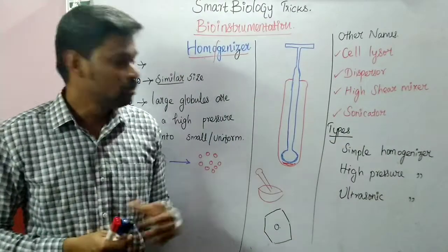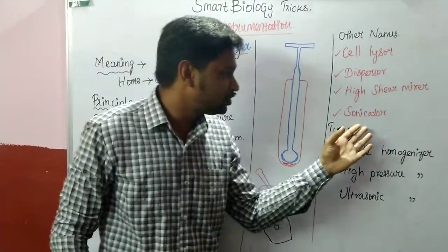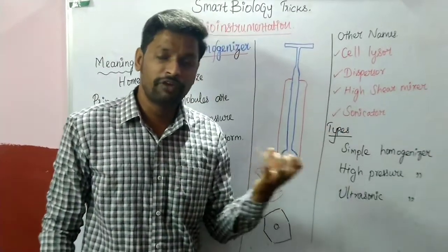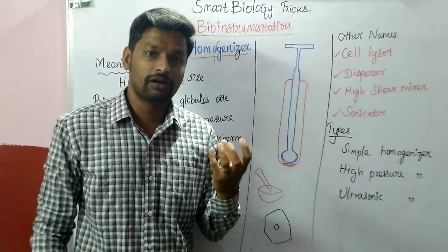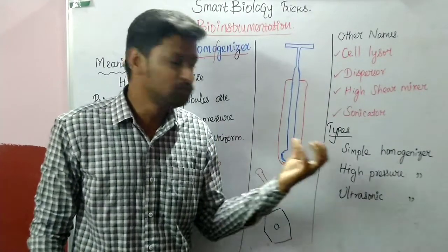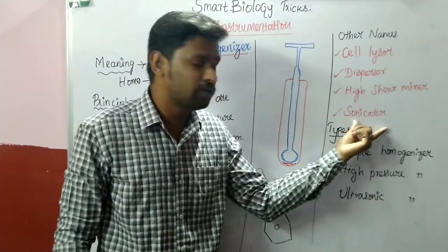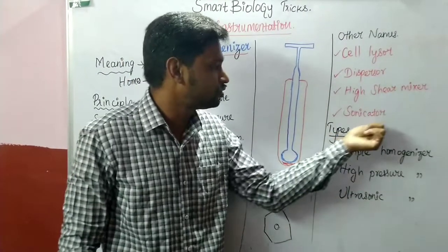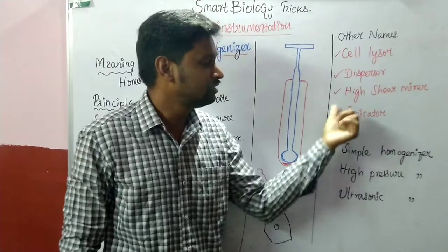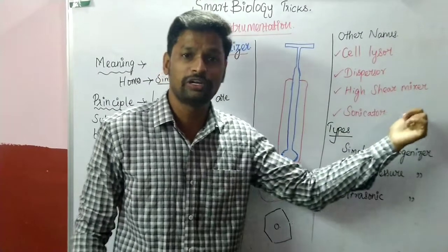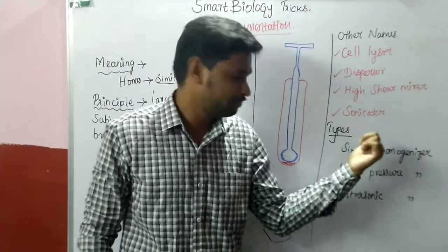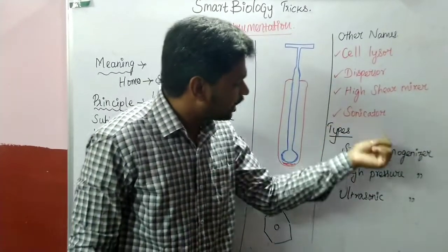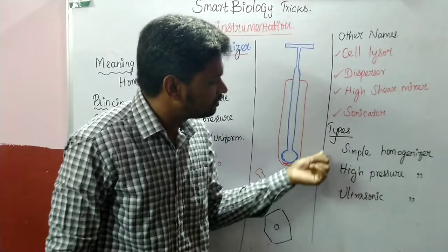The sonicator uses sound waves — specifically ultrasonic waves — to break down cells. This instrument is called a sonicator, and there are other types of homogenizers also available.